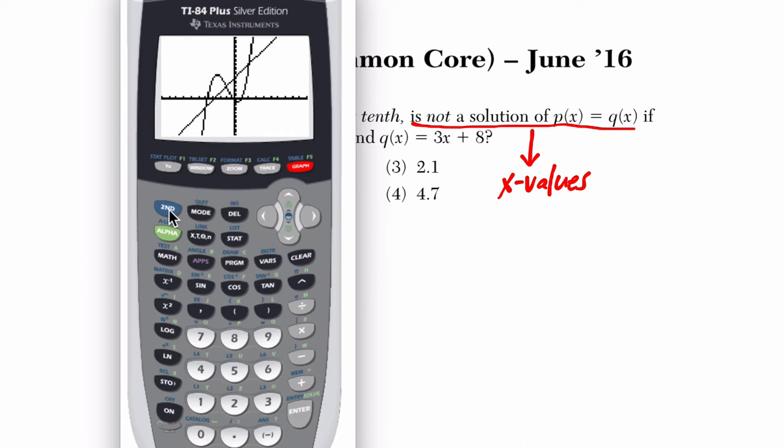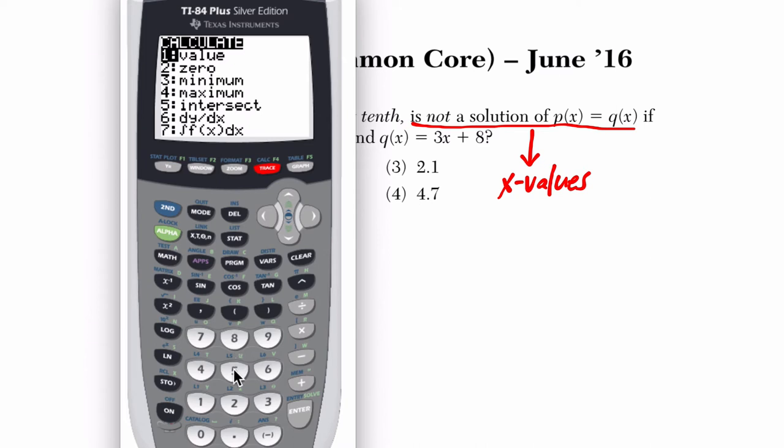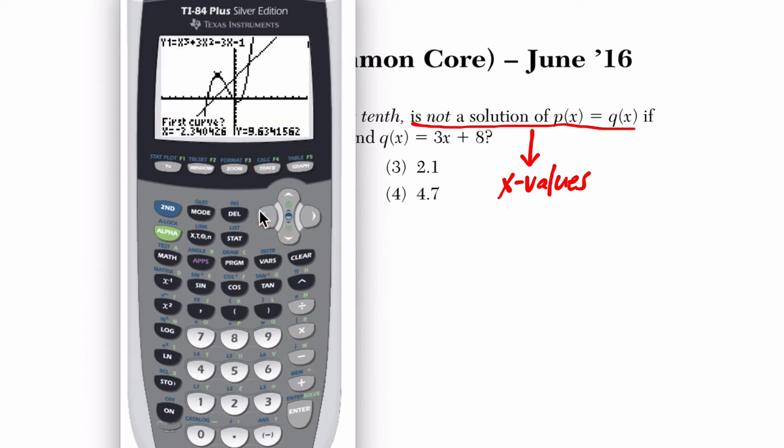That might help us out. There we go. We have a good approximation now. I press 2nd, trace, and I go to choice 5 for intersect. And I'm just going to go through my intersection points, and then we'll look at them together.